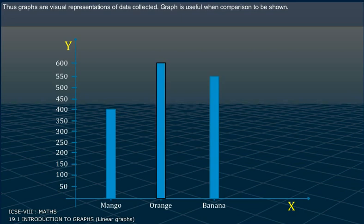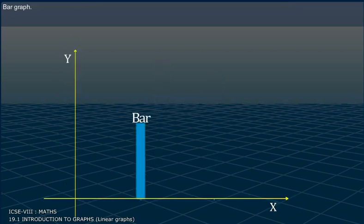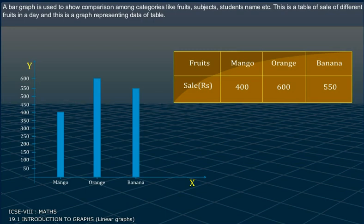Graph is useful when comparison is to be shown. A bar graph is used to show comparison among categories like fruits, subjects, students, names, etc.